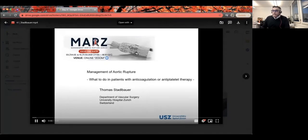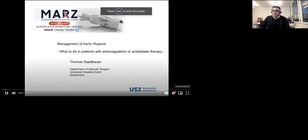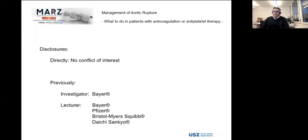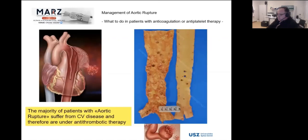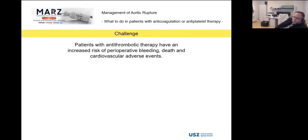I would like to thank the organizers for the privilege of speaking at the 10th anniversary of MARZ. Aortic rupture is a true medical and surgical emergency — the blood on floor sign in the operating theater often correlates with poor prognosis. However, the majority of patients with aortic rupture suffer from severe cardiovascular disease and therefore are under antithrombotic therapy. The challenge is that these patients have an increased risk of perioperative bleeding, death, and cardiovascular adverse events.